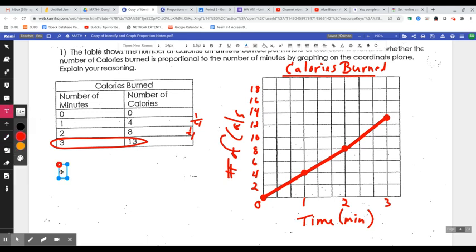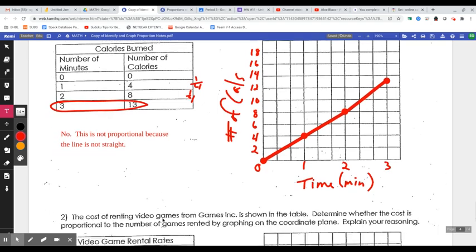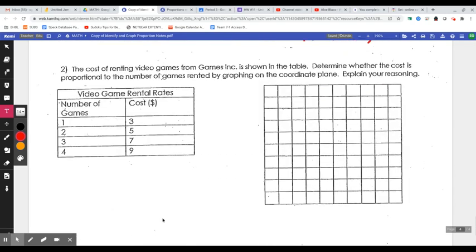So we're going to say, no, this is not proportional. Because, and what are we going to say? It does start at the origin, but it's not a straight line because it has a bend in it. So we could say, because the line is not straight. Okay. So that would be our work there. Alright.